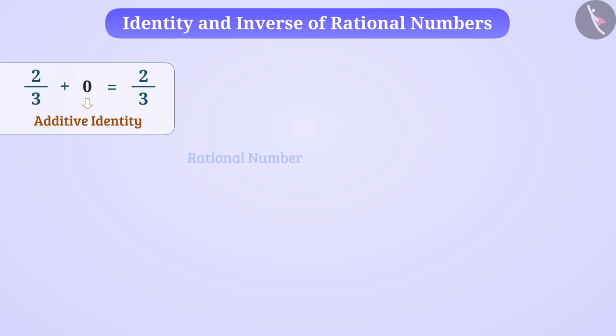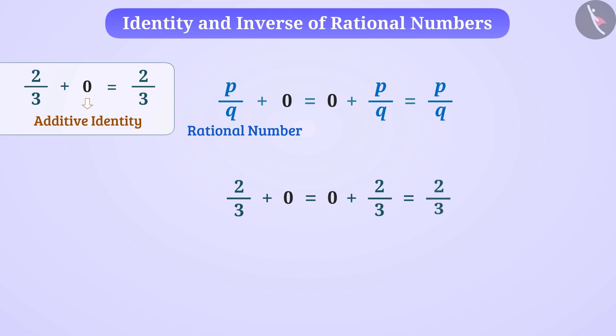In brief, for rational number p by q, p by q plus 0 is equal to 0 plus p by q is equal to p by q. For example, the answer of 2 by 3 plus 0 or 0 plus 2 by 3 is 2 by 3 only.